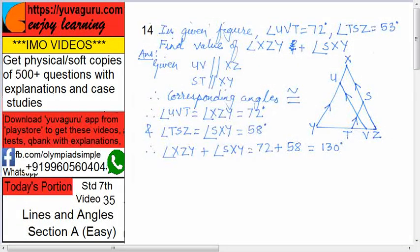So, sorry, it should be 58 degrees. So, we know SXY then becomes 58 degrees. Now, add them. We want the total of these. So, XZY plus SXY equals to 72 plus 58 equals to 130. That is the answer required.